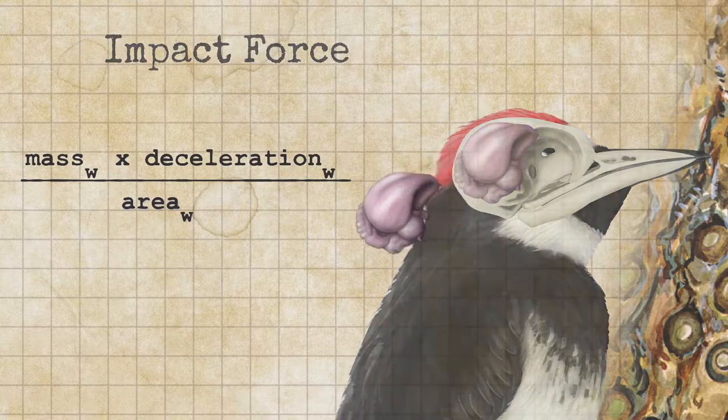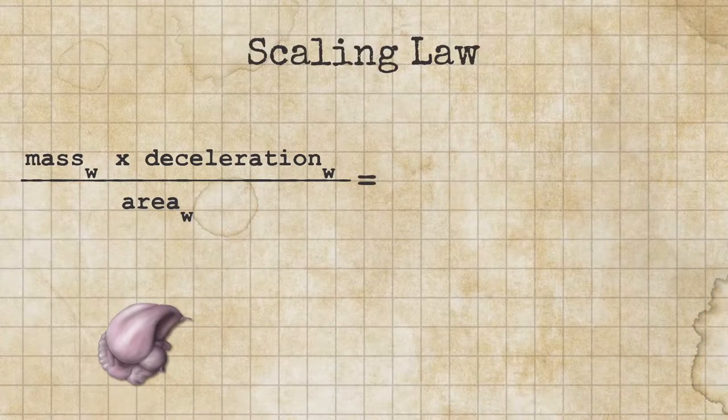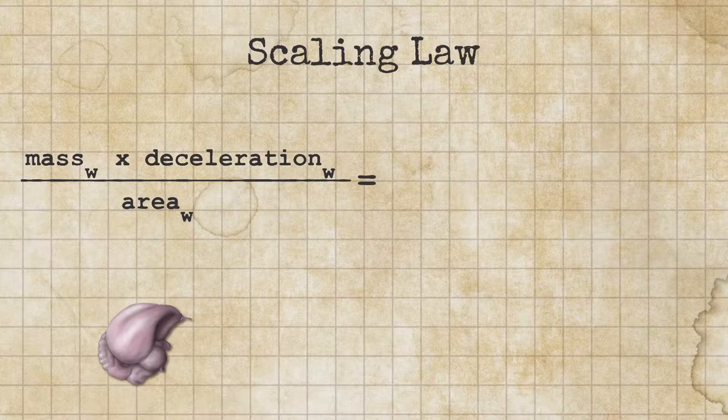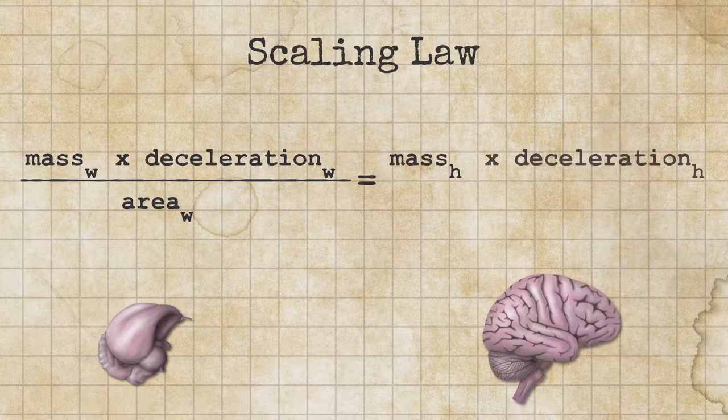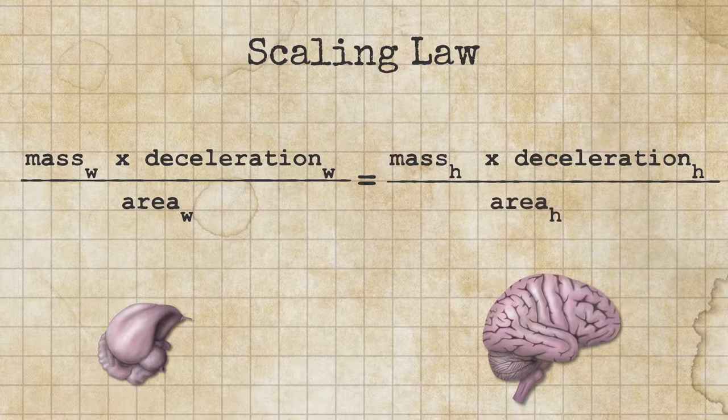The force per unit area to cause damage is similar in different species. So let's relate the impact force per unit area for the woodpecker to that of the human, and solve for deceleration, or dw.